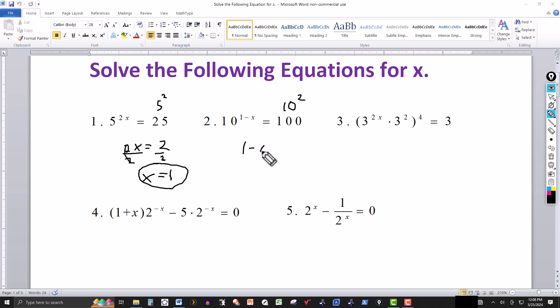1 minus x has to be the same thing as 2. Bring the 2 over and the x over here, so this will be 1 minus 2 is negative 1. And take the x over to this side, changes the sign, x equal to negative 1.